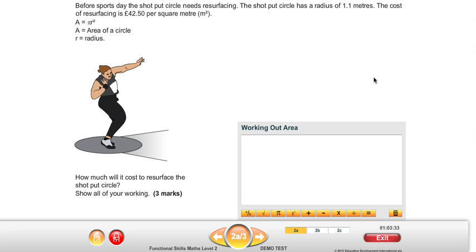So the question is, how much will it cost to resurface the shot put circle? And show all of your working. So the cost of resurfacing is £42.50 per square metre. We know what the cost is per square metre, and the area is measured in square metres. So we've actually got to work out the area of the circle in square metres in order to find out how much it's going to cost ultimately.